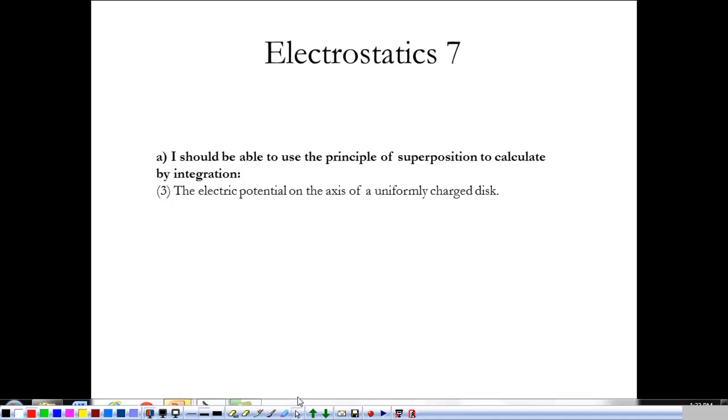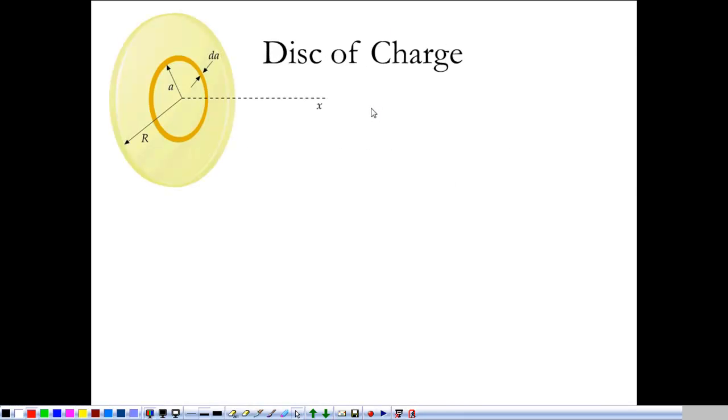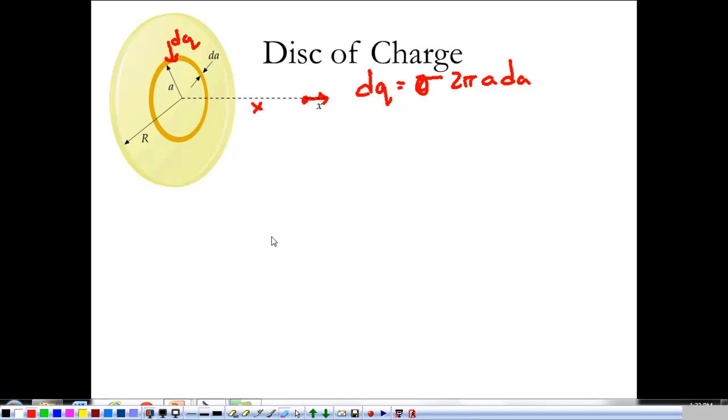All right, switching slides. So for a uniformly charged disk of charge, our differential charge element DQ is σ times 2πA·dA. And the differential electric field at some location X away, we know it's going to point in this direction, is K·DQ·X over (X² + A²)^(3/2).